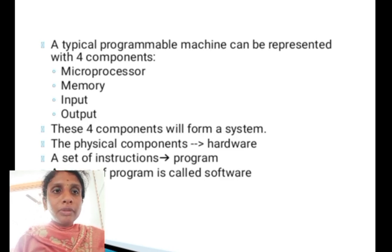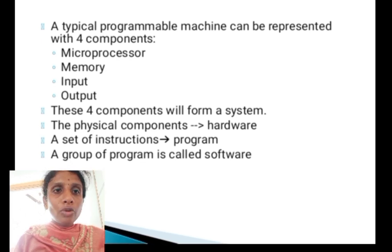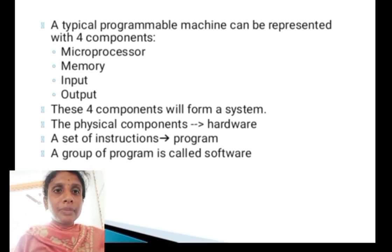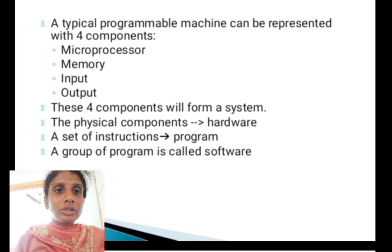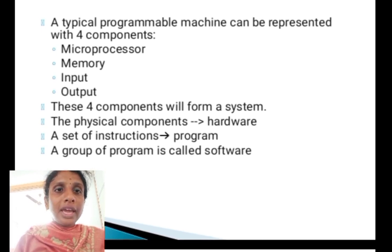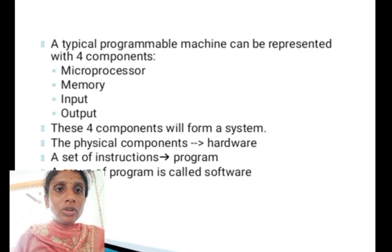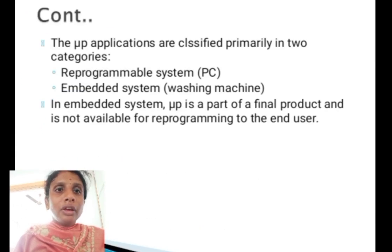A typical programmable machine can be represented with four components: microprocessor, memory, input, and output. These four components form a system. The physical components are known as hardware, a set of instructions is called a program, and a group of programs is called software. Microprocessor applications are classified into two categories: reprogrammable systems and embedded systems.